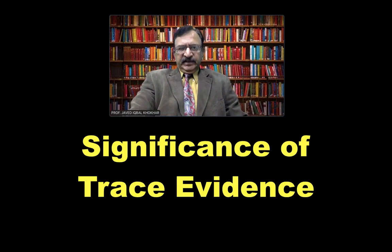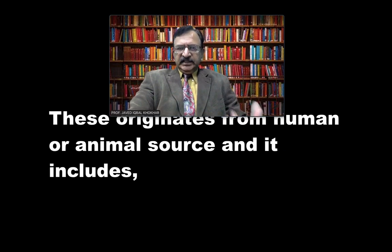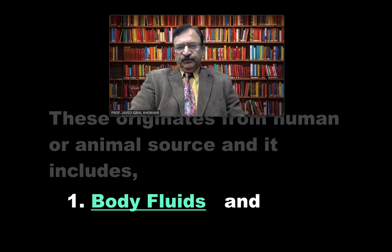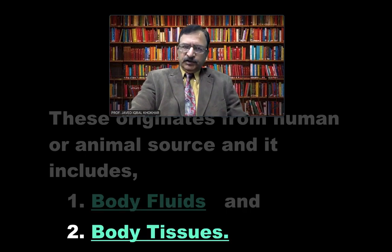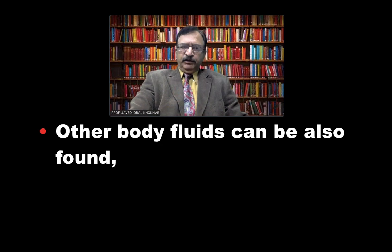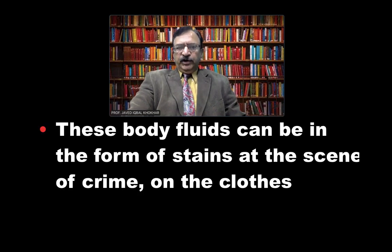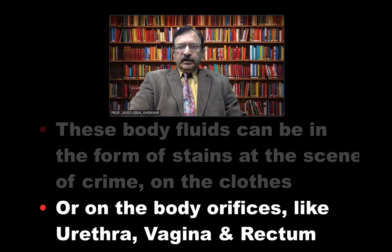Regarding the significance and medical-legal importance of trace evidence: biological evidence, if found, may originate from human or animal sources, and includes various body fluids or body tissues. Body fluids may include saliva, blood, semen, or other body fluids such as cerebrospinal fluid, urine, vomitus, stomach washings, and other excreta. These body fluids can be in the form of stains at the scene of crime, on clothes, or around body orifices such as the urethra, vagina, or rectum.